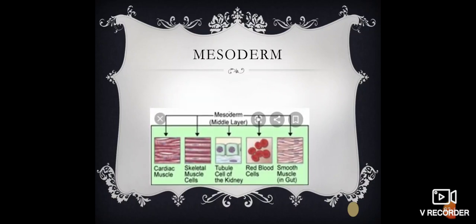We talk about mesoderm. Mesoderm forms cardiac muscle cells, skeletal cells, tubule cells of kidney, and red blood cells.